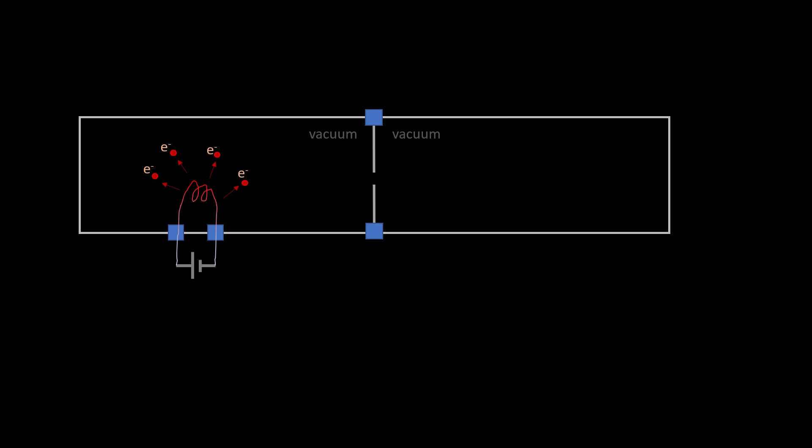Say we have this setup where we want to detect individual electrons. We have two compartments that are under a very high vacuum. And in this compartment we generate electrons from a heated filament, because we have found that it emits them.